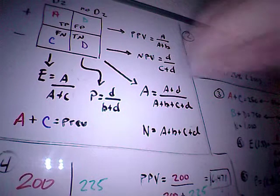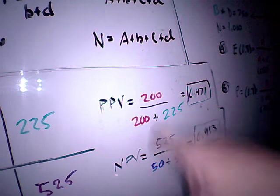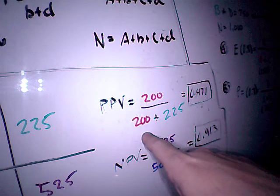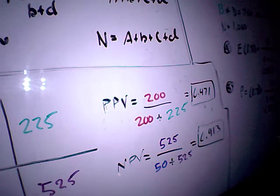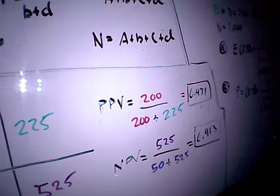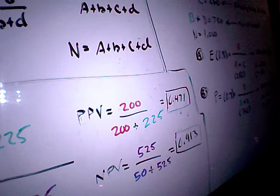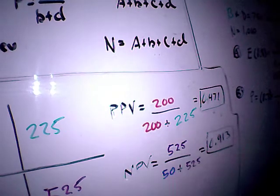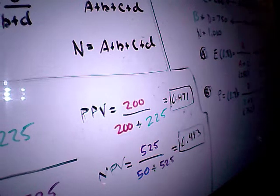Positive predictive value, so PPV equals A divided by A plus B. So I have A, which is 200, divided by A plus B, 200 plus 225. So 200 plus 225, and then 200 divided by that, and that is going to equal 0.471 or 47.1 percent. So that is a 47.1 percent positive predictive value.